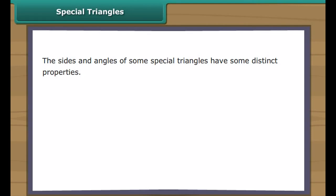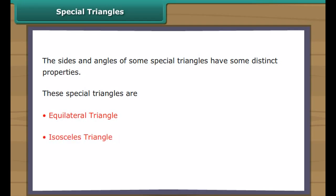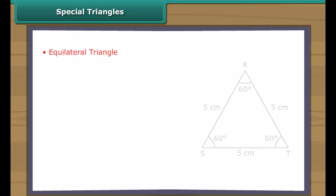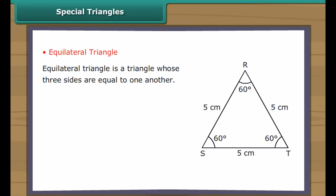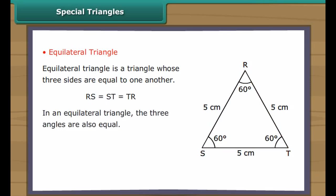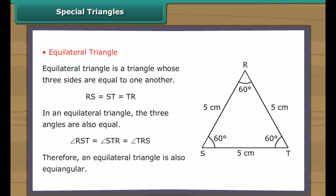Special triangles: the sides and angles of some special triangles have distinct properties. These are the equilateral triangle, isosceles triangle, and right-angled triangle. An equilateral triangle is a triangle whose three sides are equal to one another. In triangle RST, RS = ST = TR. In an equilateral triangle the three angles are also equal: angle RST = angle STR = angle TRS. Therefore an equilateral triangle is also equiangular.